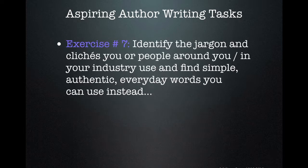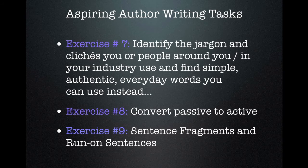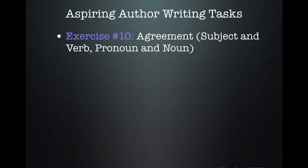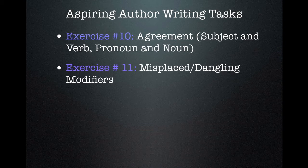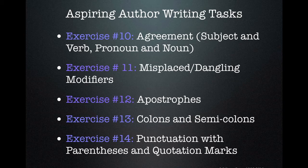Exercise six was to tighten your text by being more concise — all in the workbook. Number seven: identify jargon and clichés you or people around you use and find simple, authentic, everyday words instead. Eight: convert passive to active voice. Nine: sentence fragments and run-on sentences. Ten: agreement — subject and verb, pronoun and noun. Eleven: misplaced or dangling modifiers. Twelve: apostrophes. Thirteen: colons and semicolons. Fourteen: punctuation with parentheses and quotation marks. That was the adventure down the rabbit hole of grammar, language, spelling, and punctuation.